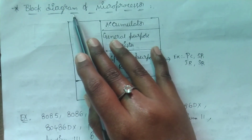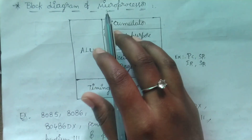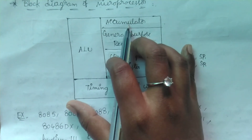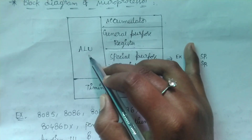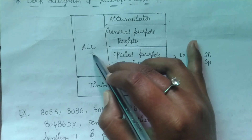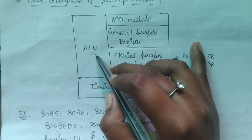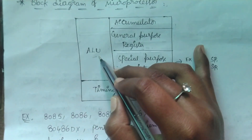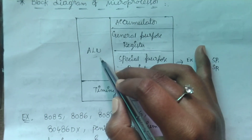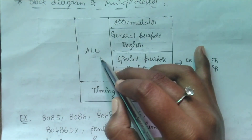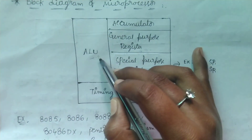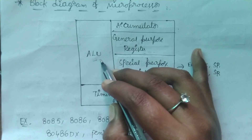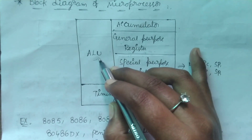Now we have to see the block diagram of microprocessor, which is used as the central processing unit in the microcomputer. In this CPU, it mainly consists of ALU — Arithmetic and Logic Unit — which can perform arithmetic and logical operations. Arithmetic operations include addition, subtraction, multiplication, division, and modulus. Logical operations include AND, OR, NAND, NOR, XOR, and XNOR.